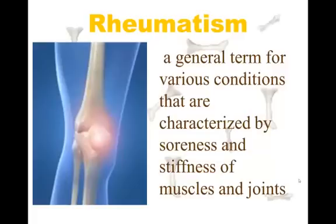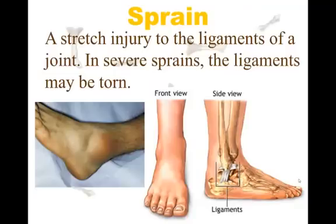Rheumatism — not rheumatoid arthritis, which is another crippling disease — just rheumatism refers to various conditions involving soreness or stiffness of your muscles and joints. A sprain is when you stretch a ligament. In severe sprains you can actually tear the ligament, which takes time to heal and sometimes even requires surgery. It's a stretch injury to the ligament — you've stretched it too far.